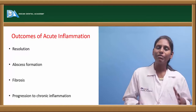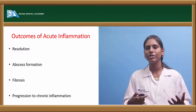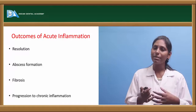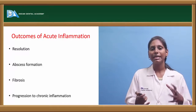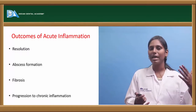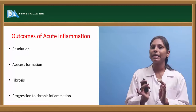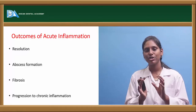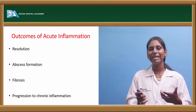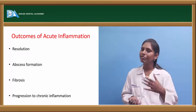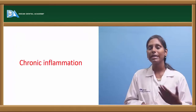Once acute inflammation occurs, the possible outcomes are: first, resolution. If it doesn't resolve, it can lead to acute abscess formation — the exudate material collects as a localized collection of pus. There can also be fibrosis in the healing process. If acute inflammation is not treated properly, it can progress to chronic inflammation.